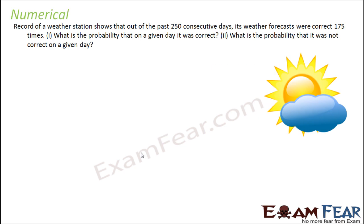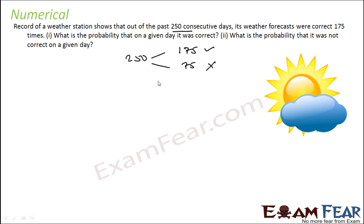Record for a weather station shows that out of 200 consecutive days, the weather forecast were correct for 175 times. So out of 250, 175 is correct and the remaining is how much? 250 minus 175, then 75 are wrong forecasts.